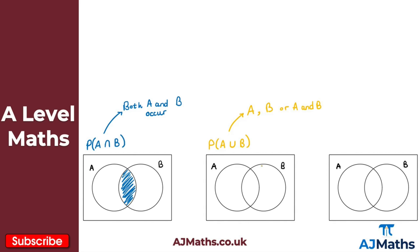If we shade the union on the Venn diagram, we shade circle A, we shade circle B, and we also shade the intersection — the A and B region. So basically the union is everything inside both circles, including the intersection.